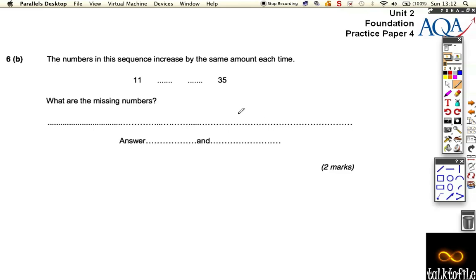If we look at part B now, it says the numbers in the sequence increase by the same amount each time, not like the third one but the first two. It goes up or down by the same amount. What are the missing numbers?